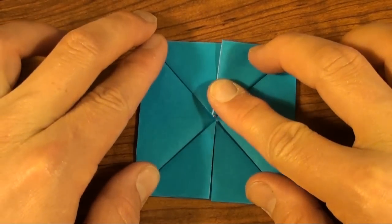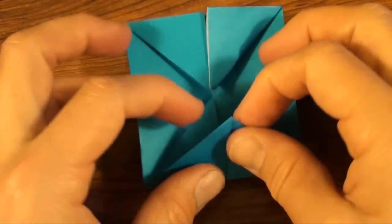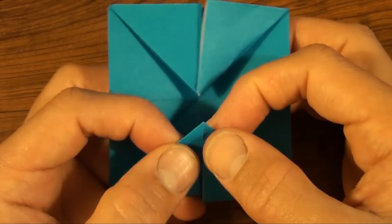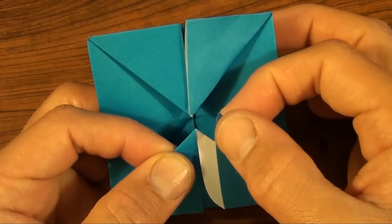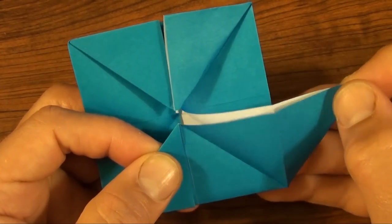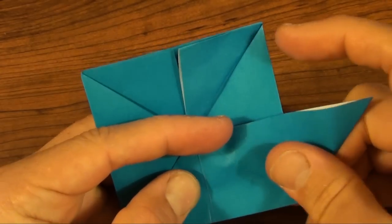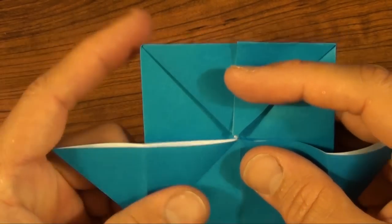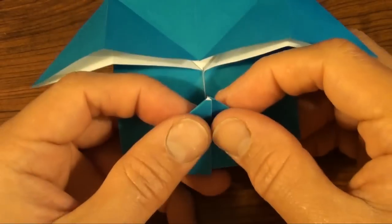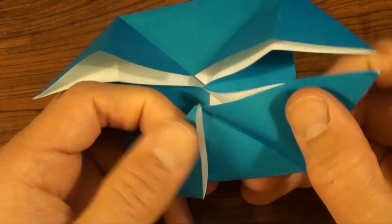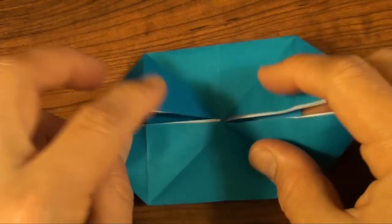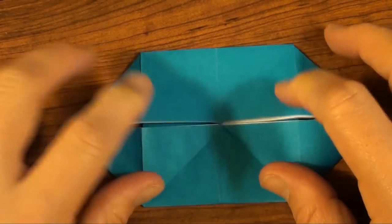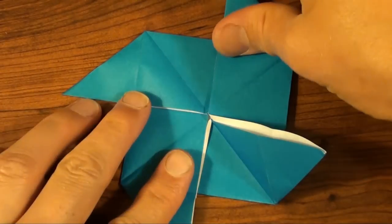And we are ready to make a pinwheel base. So what you do is you grab right here and you just pull this out and flatten. Same thing over here. And flatten it. And two more times. One. And two. And flatten down. See, it's a pinwheel base.